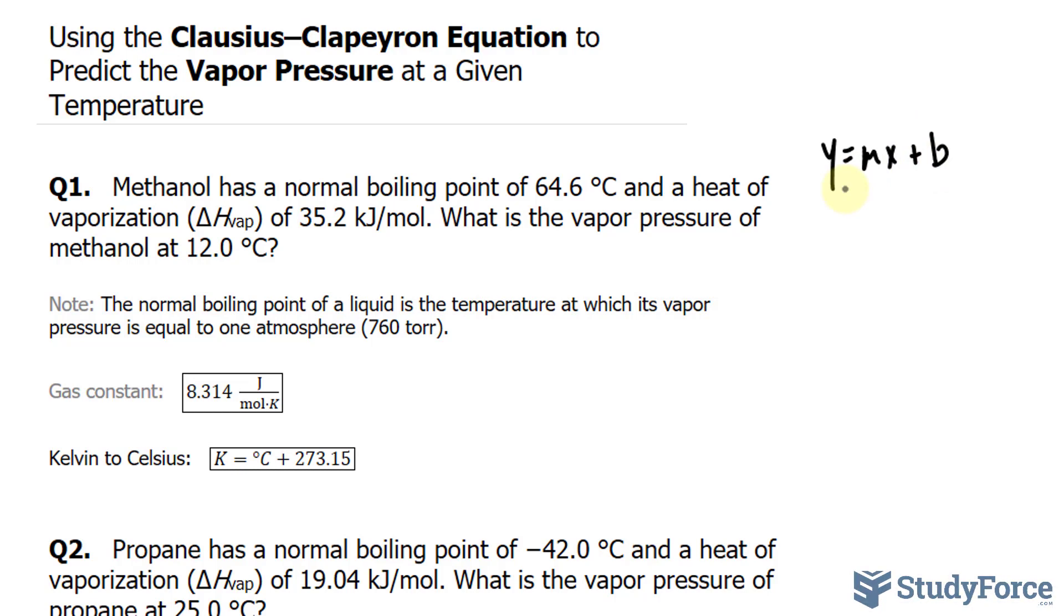What's interesting about the Clausius-Clapeyron equation is that when you find the slope, it actually relates two things: the heat of vaporization of that molecule, in our case methanol, and the gas constant. The slope equals negative delta H vap over the gas constant R.